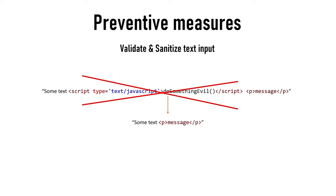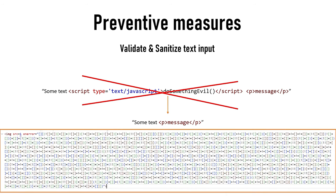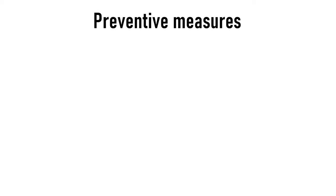The hard thing is that JS code can be obfuscated to something like this, and it is still a valid JS alert statement inside an image onerror attribute. You can check this out on JSFuck.com. Another measure is cookie security.